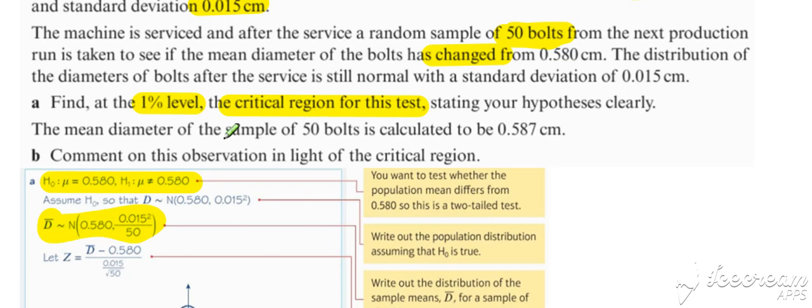For part B of the question, we are given the test statistic. So we can compare that to our critical region and then comment on our conclusion from there.